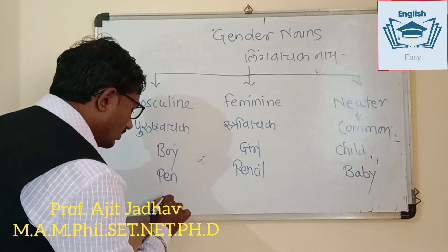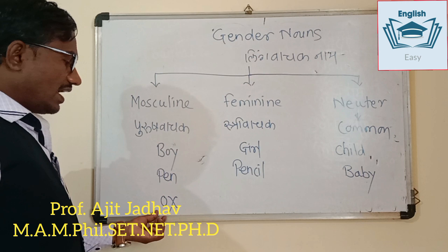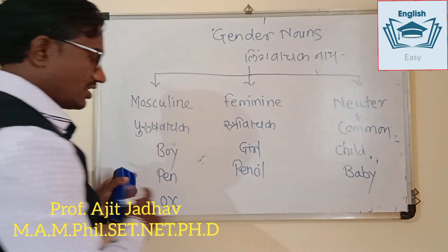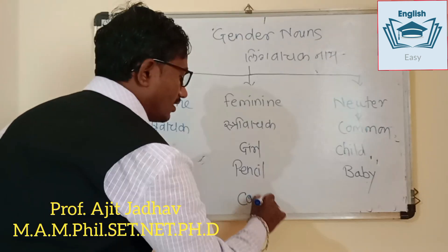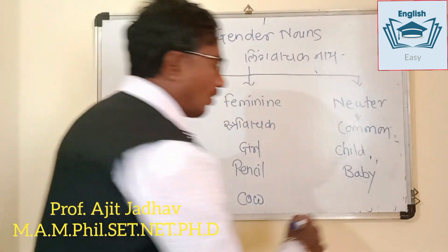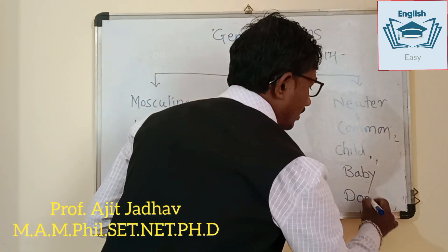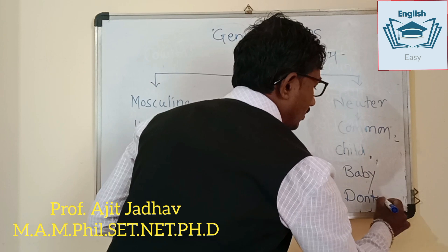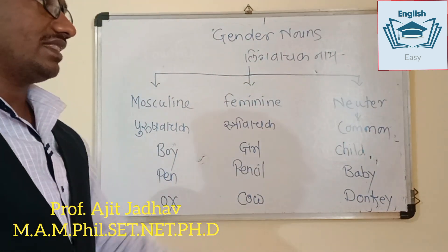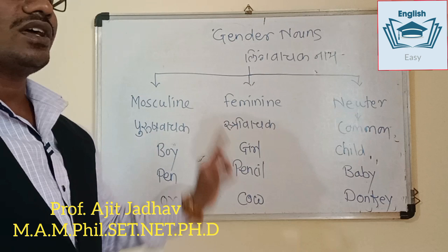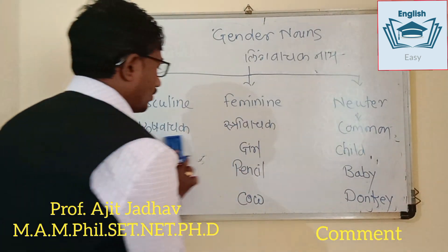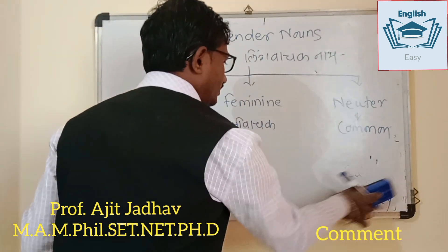For example, we have a cow and a cow. We have a donkey. We have a cow and a cow, and we have a donkey.